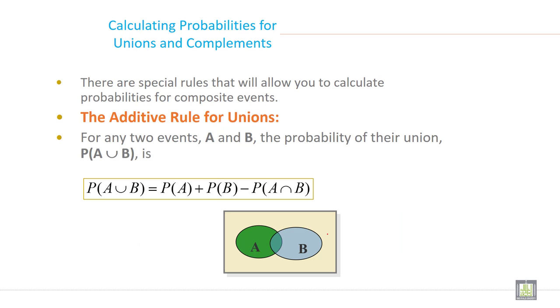There are special rules that will allow you to calculate probabilities for composite events. The additive rule for unions: for any two events A and B, the probability of their union, P(A∪B), is P(A) + P(B) - P(A∩B).